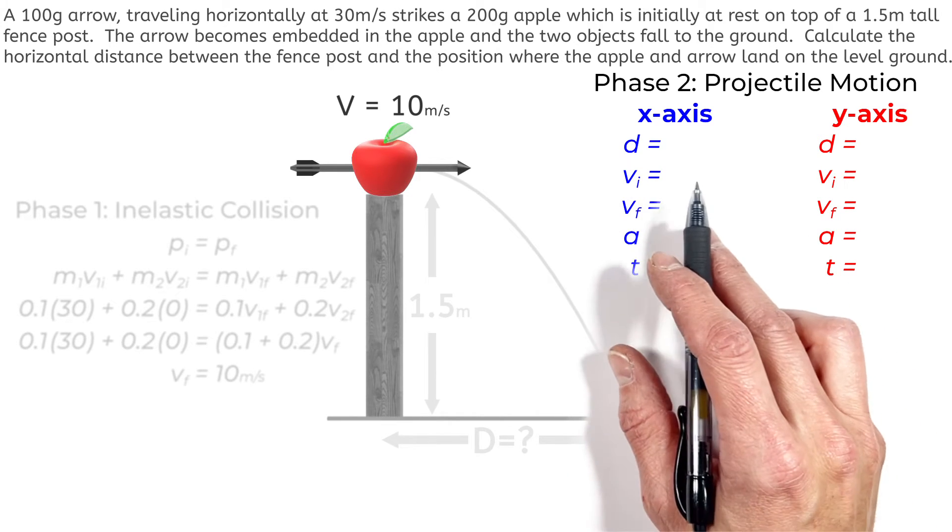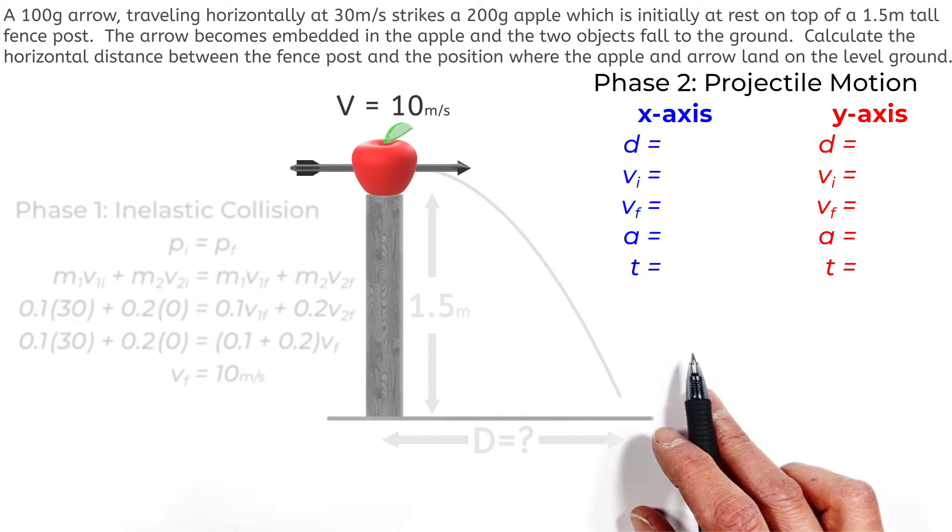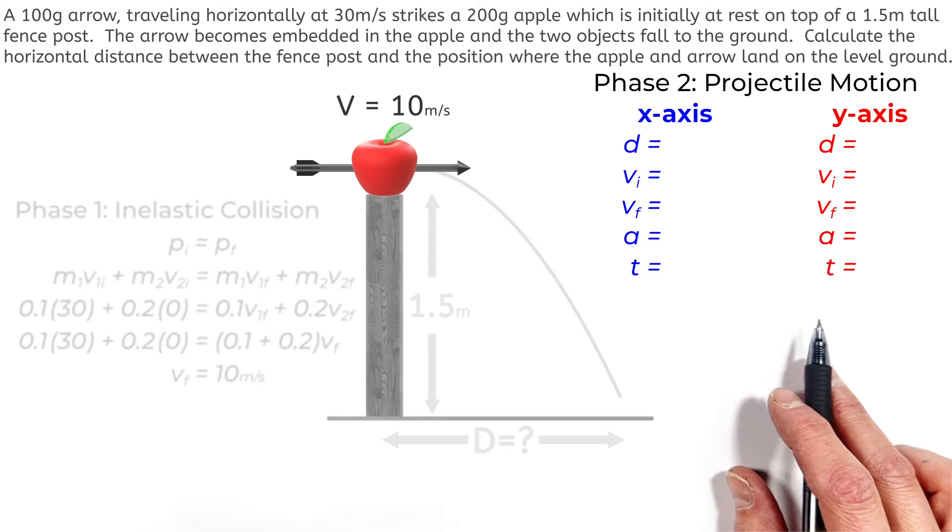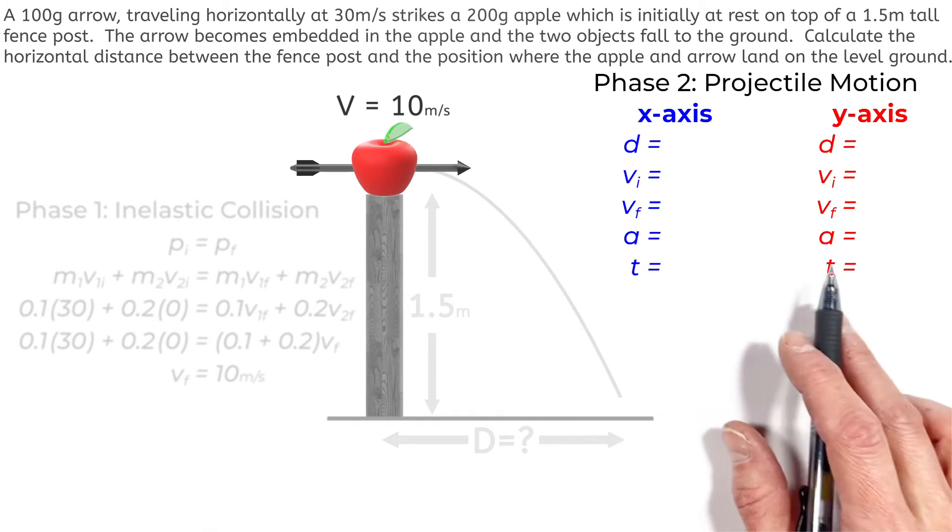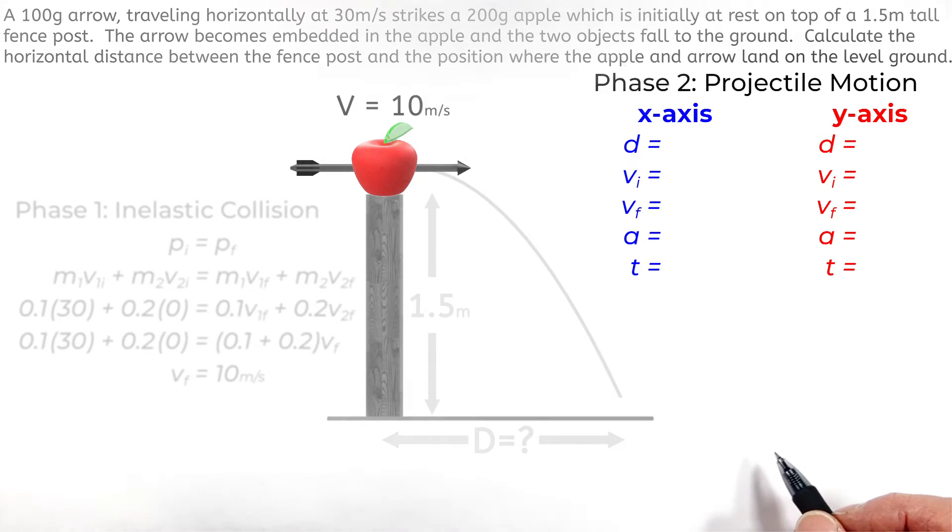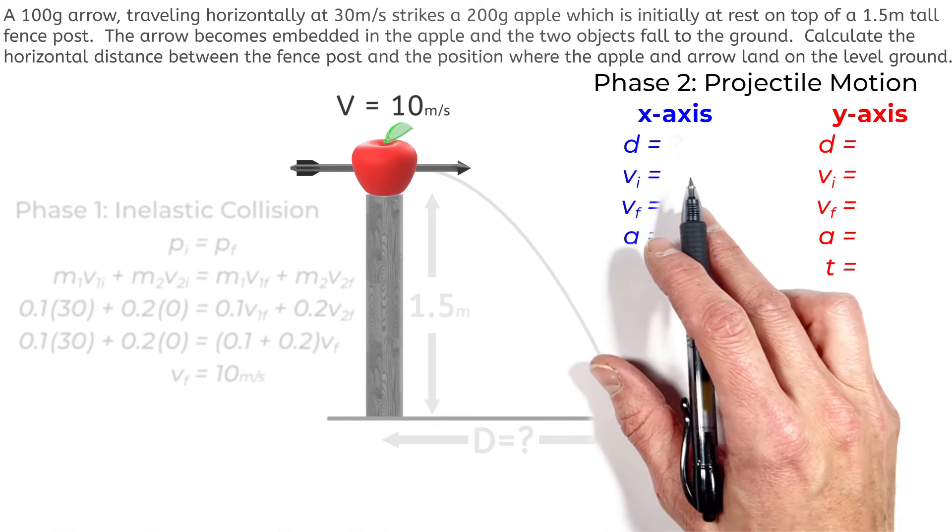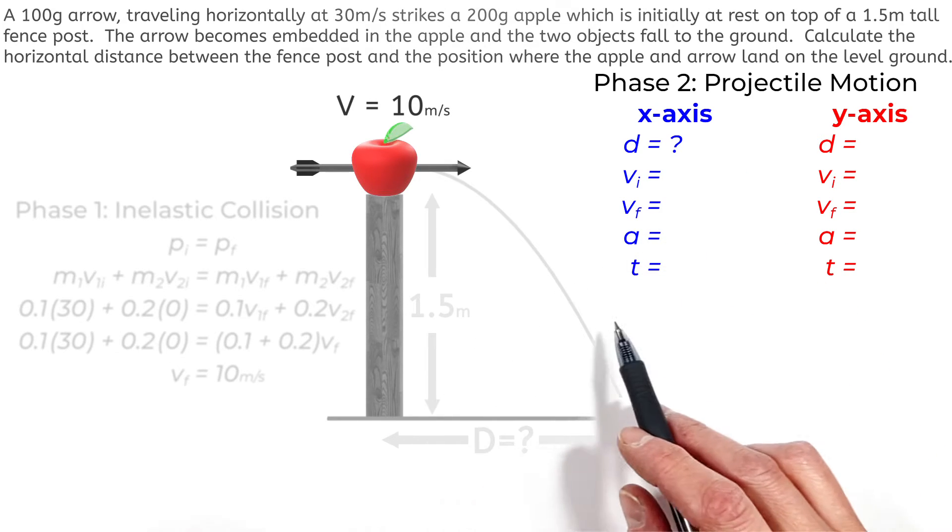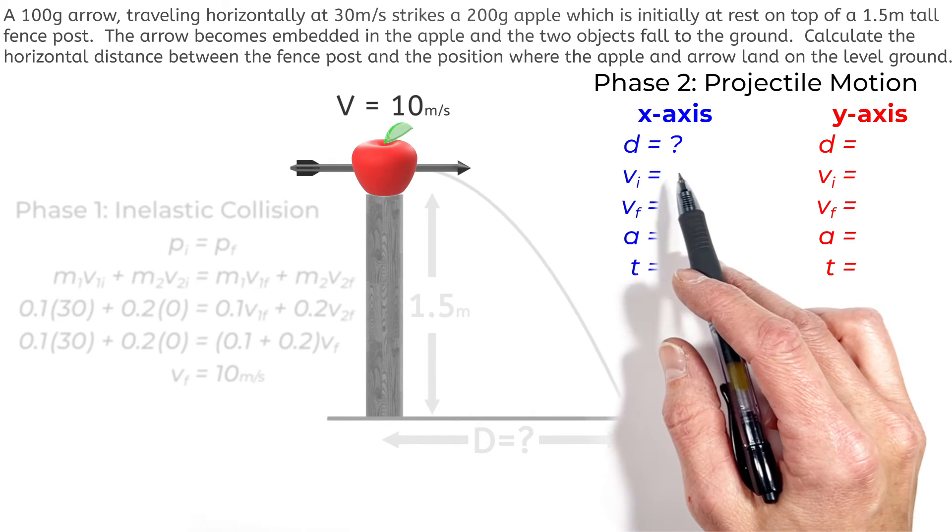So in the x-axis, we have displacement, initial and final velocity, as well as acceleration and time. And we have the same five variables in the y-axis. And all we're going to do here is take everything we know so far and try to fill out as much of this table as possible before working into any calculations over here to solve for this horizontal displacement. You see, ultimately in the x-axis, we're trying to solve for the horizontal displacement of the arrow. That is d in the x-axis.